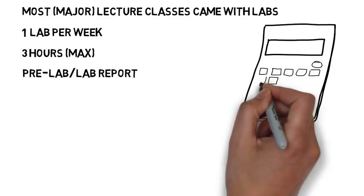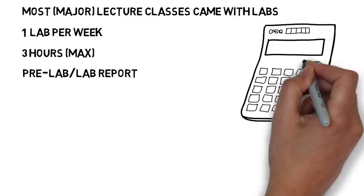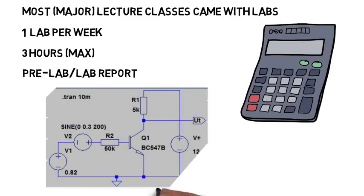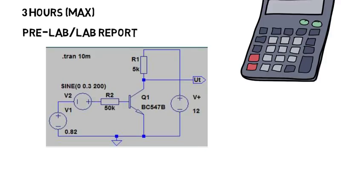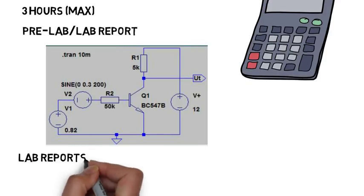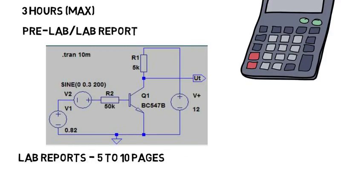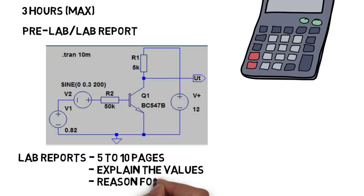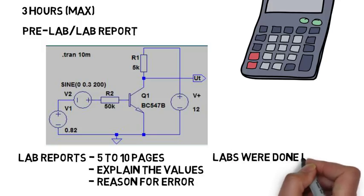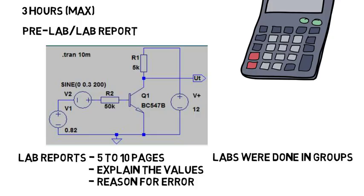Pre-labs typically involve some calculations you may expect to measure in the lab, or a computer simulation of the circuit we were making to get the values that way. Lab reports were often somewhere between 5 and 10 pages if you included cover page and table of contents. But some were closer to even 20 because there were some times where a lot of graphs and plots were needed. The report consisted of things like explaining what values you got, why they might have been off, and so on. And all of these labs were typically done in groups, I rarely ever did a lab by myself.